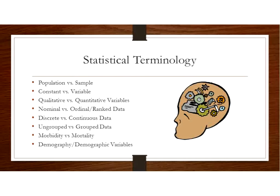Discrete versus continuous data — both will be quantitative. Discrete data consists of whole numbers with no decimals or fractions, such as 2, 5, or 10 — a whole number or integer. Continuous data is the opposite: numbers with decimals or fractions, like two and a half or two and a quarter.